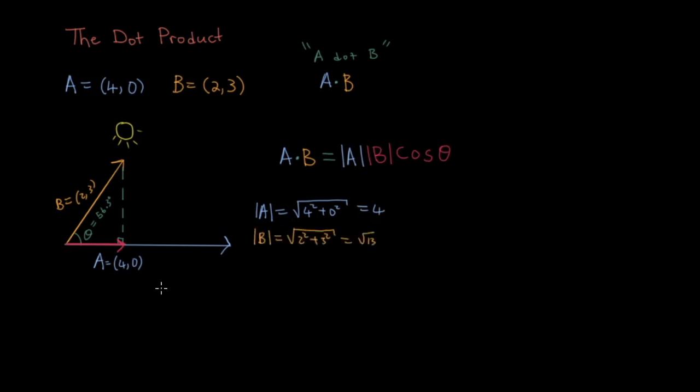And the magnitude of B is the square root of 2 squared plus 3 squared, which gives us root 13. We also know that theta is equal to 56.3 degrees. Putting these numbers into our equation gives us the number 8. So 8 is our dot product.